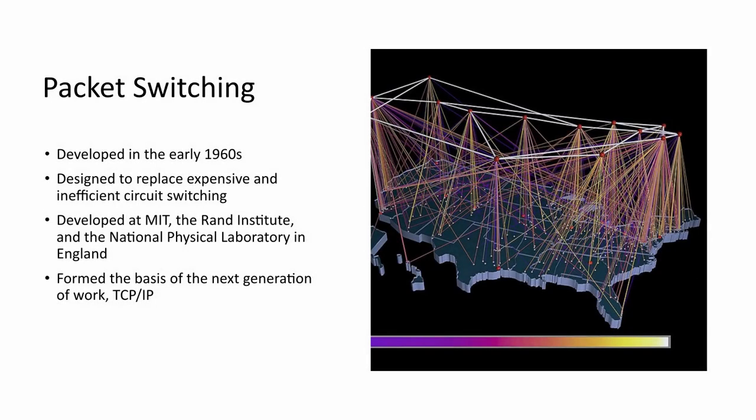The first area we'll talk about is packet switching. Packet switching was developed in the early 1960s, and it was designed to replace expensive and inefficient circuit switching. The state of the art at the time was point-to-point communication, which was very inefficient — you had to lay connections to every conceivable point that you would go to.